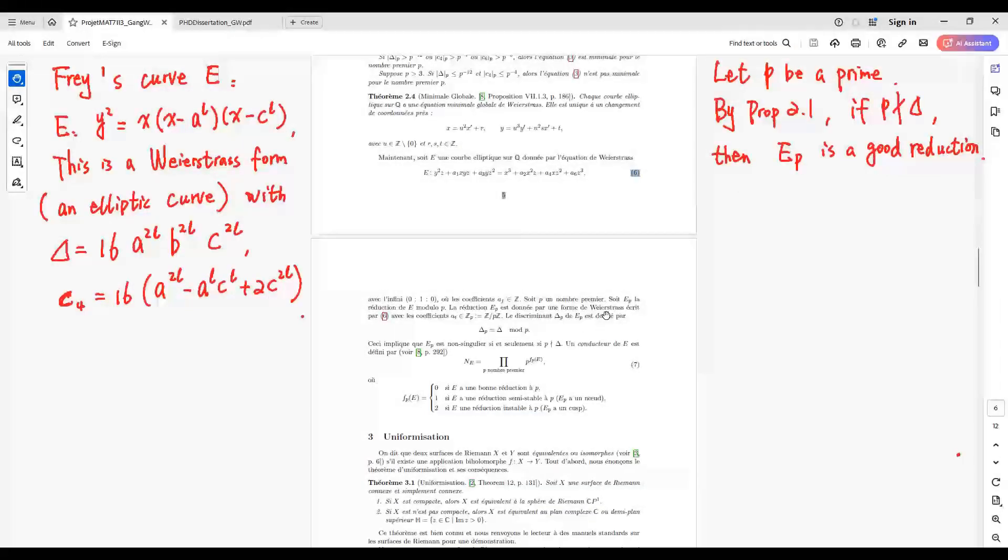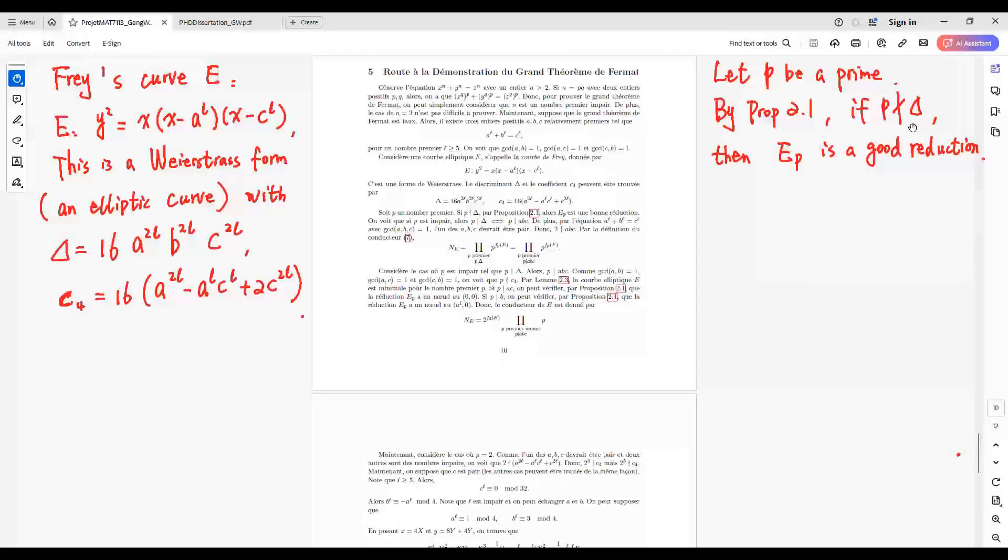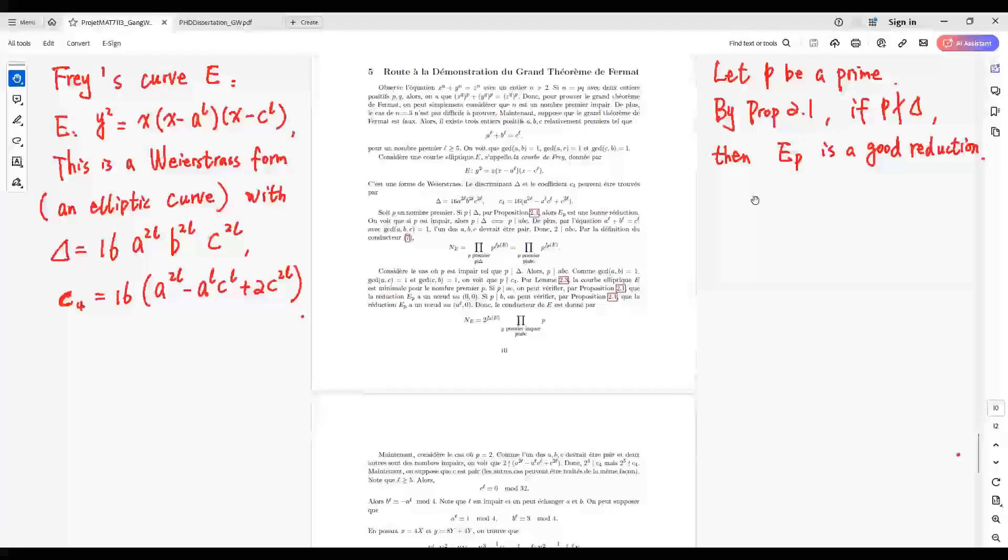Here, if delta is not divisible by P, then E_P is good reduction.